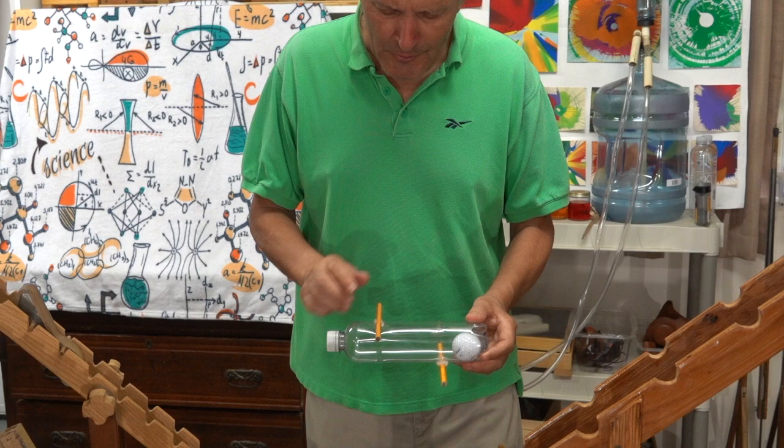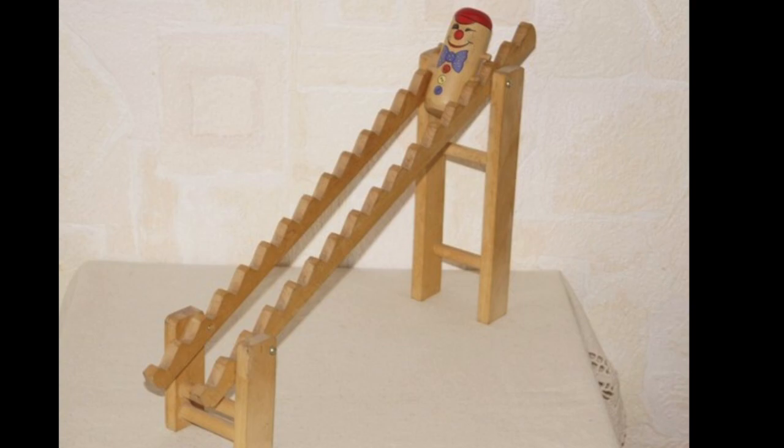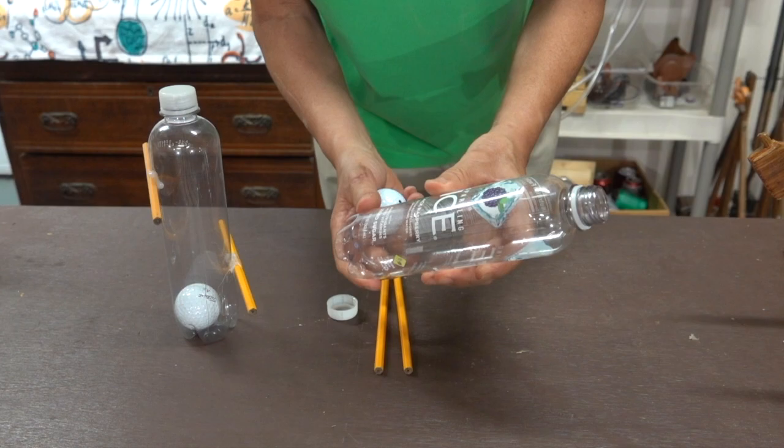Now, these types of toys have been around for a while and you can buy one commercially. The first tumbler uses a golf ball inside this clear plastic juice bottle. It has two pencils as the axles and they're glued to the outside.